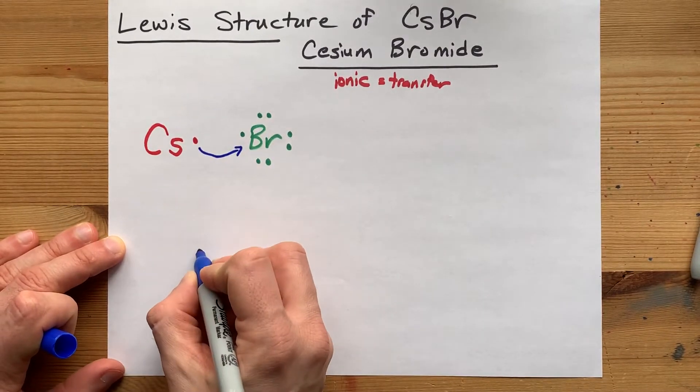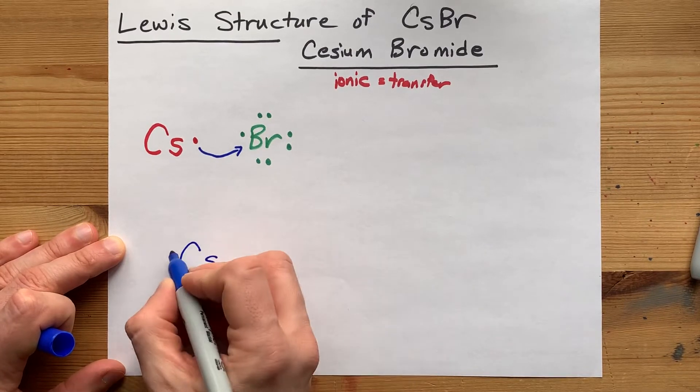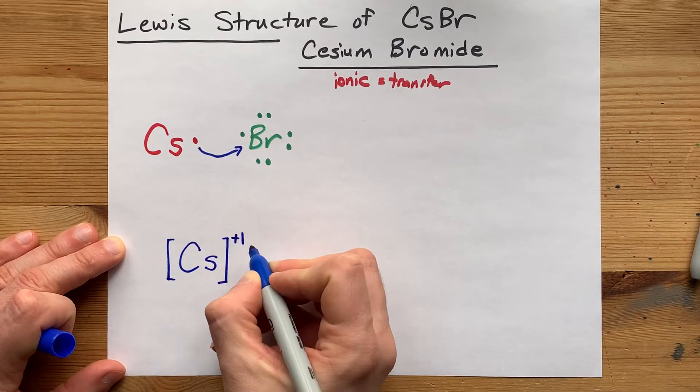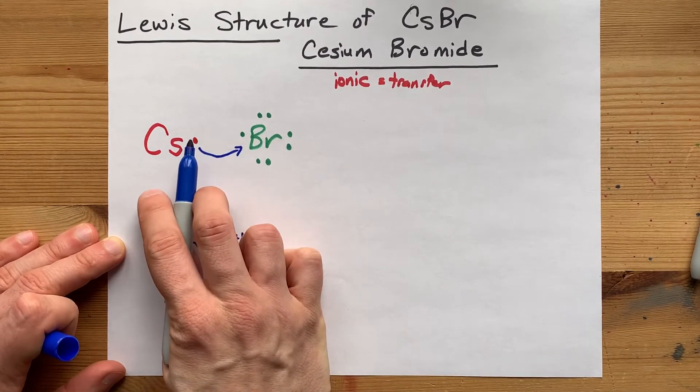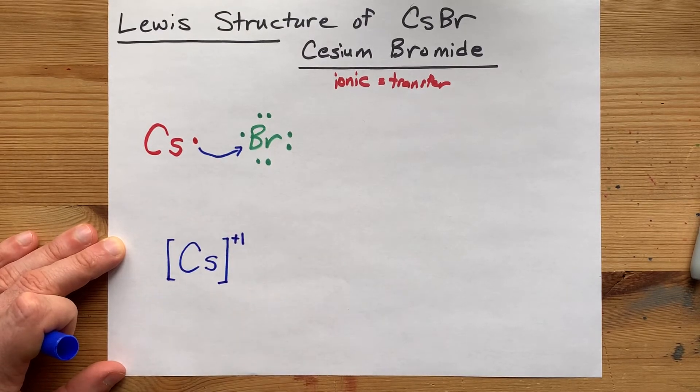And what you end up with is a cesium atom that has no electrons in what was its outer shell. That means you have a plus one charge because you lost a negatively charged electron. Subtracting a minus gives you a plus charge.